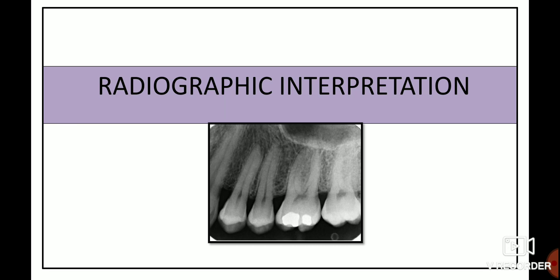In an intraoral periapical radiograph, while interpreting a tooth, it is divided into the coronal region, the alveolar crest where we can assess the alveolar crest, the root, and the periapical region.